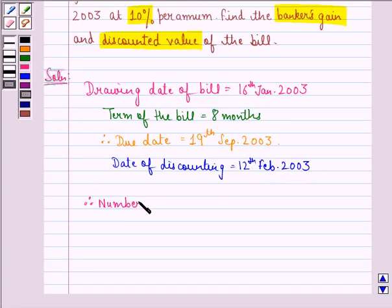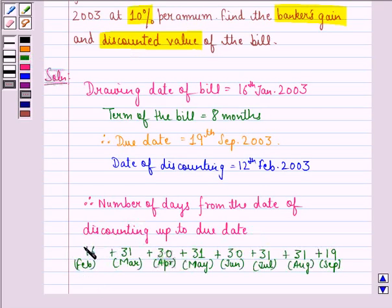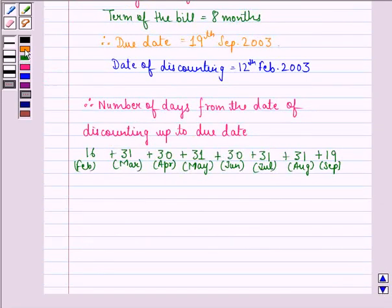Therefore, number of days from the date of discounting up to due date is 16 days of February, 31 days of March, 30 days of April, 31 days of May, and so on till 19 days of September. This equates to 219 days, or we can say that T equals 219 divided by 365.